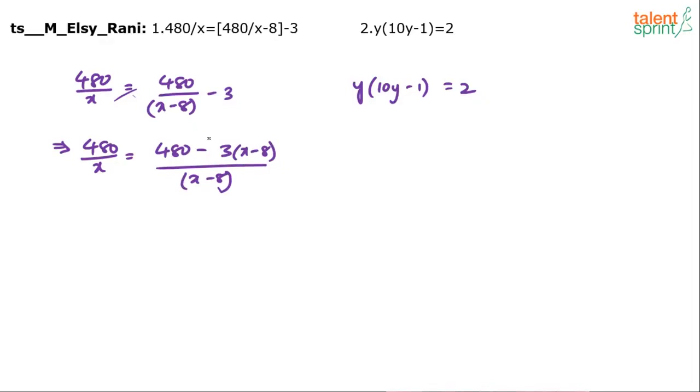If you want you can just cancel out 3 everywhere right? 3 into 1, 3 into 160 and 3 into 160, because anyway in quadratic equation you have to take the common part out. And now you cross multiply. So we get 160x minus 8, 160 times of x minus 8 equals to 160x minus x into x minus 8.